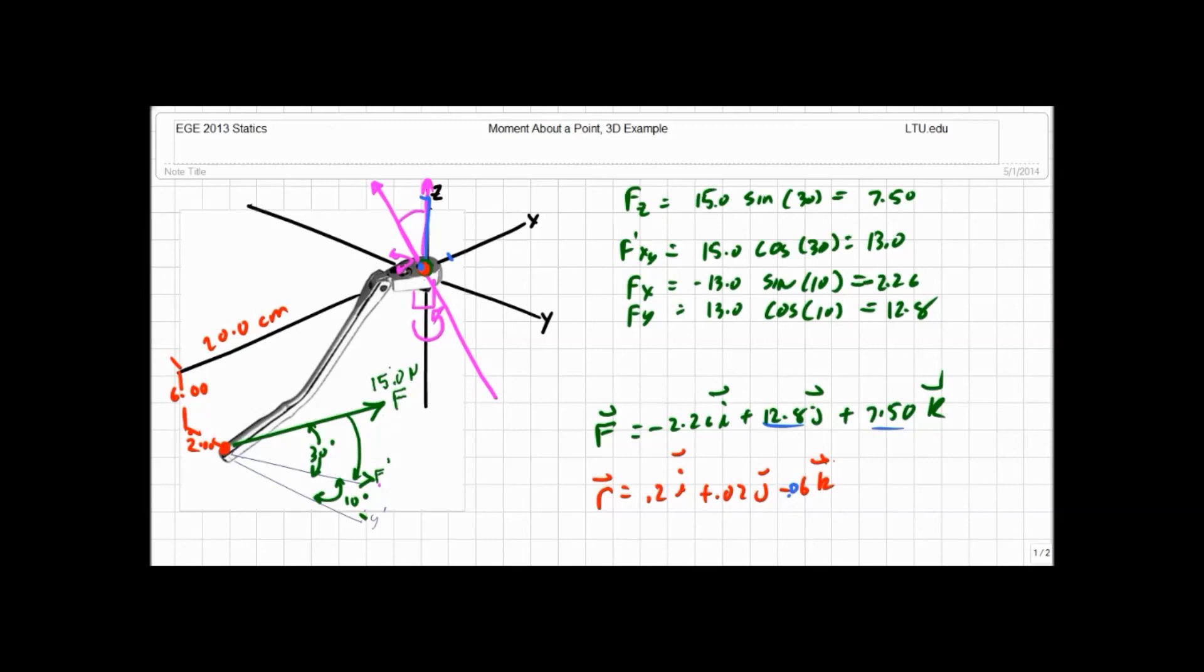But when we get this moment about a point through the cross product, that moment is actually perpendicular or normal to the plane formed by our position vector and our force vector. So it's just normal to this plane there, wherever direction you can envision that going.